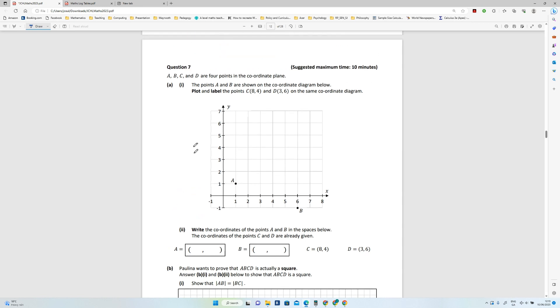Right, so question seven, Junior Cert Maths 2023 Higher Level. A, B, C, and D are four points in the coordinate plane. The points A and B are shown. Plot and label points C and D on the same diagram. So that's part one, so let's do that.